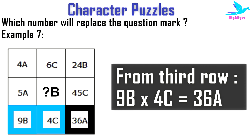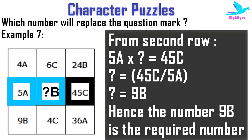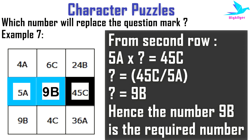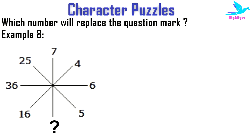This relationship also appears in the third row: 9b × 4c = 36a. So in each row the product of the first two numbers gives the third. Applying the same logic to the second row: 5a × (required number) = 45c, and since the alphabet is b, the required number is 9, giving 9b.